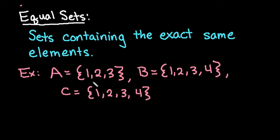And with this, even though A and B have a lot of the elements the same, they are not exactly the same elements. So B and C would be equal sets, and it's just denoted as set B equals set C. And the reason they are equal is because all of the elements are exactly the same.